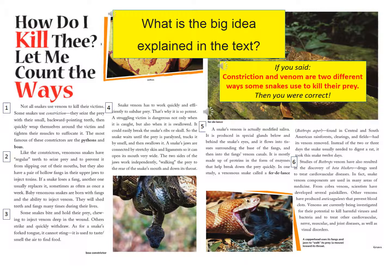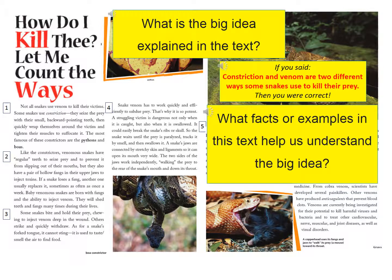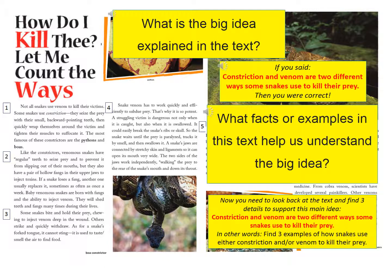Now that I found the big idea, I need to find some supporting details. So I ask myself: what facts or examples in this text help me understand the big idea? To do this, I'm going to look back at the text, reread it, and find three details to support my main idea — that constriction and venom are two different ways some snakes use to kill their prey. I'm going to find three examples of how snakes use either constriction or venom to kill their prey.